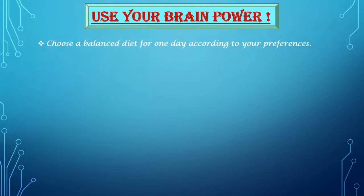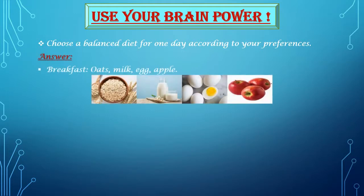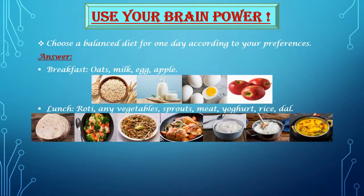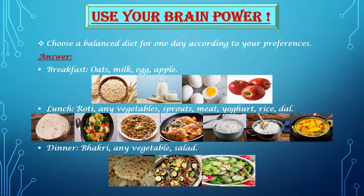Now students, use your brain power and choose a balanced diet for one day according to your preferences. The balanced diet should include breakfast, lunch and dinner. For breakfast, you can have oats, milk, egg, apple. For lunch, you can have roti or chapati, any vegetables, sprouts, meat, yogurt, rice, dal. And for dinner, you can have bhakri, any vegetable and salad.